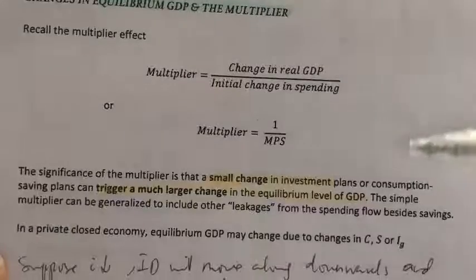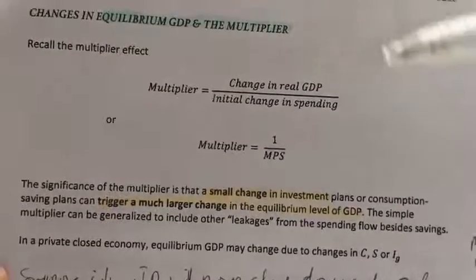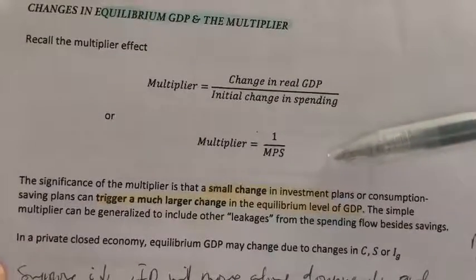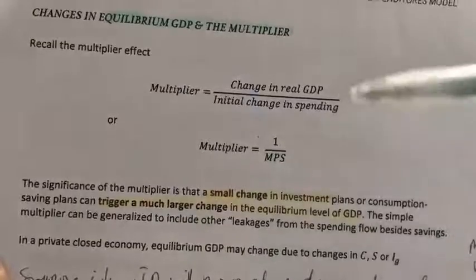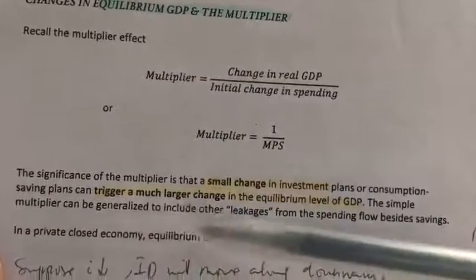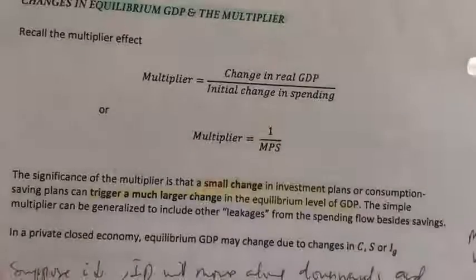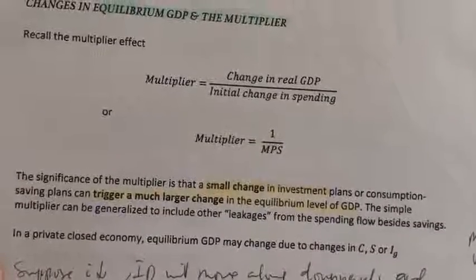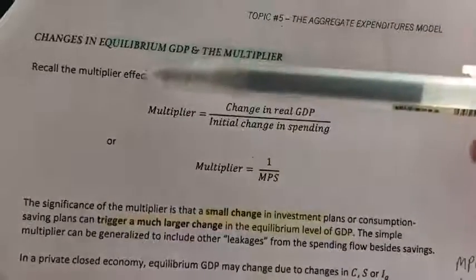So, what is the significance of the multiplier is that here. If there is a small change in investment or consumption, it will trigger a much larger change in equilibrium level of GDP. Okay, remember that's the definition of multiplier effect, right?